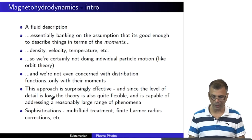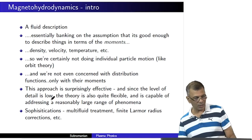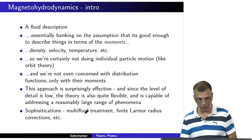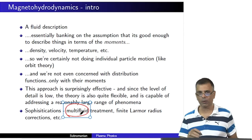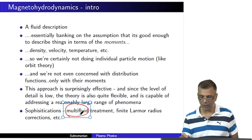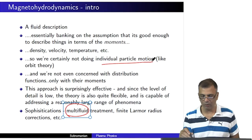Apart from basic magnetohydrodynamics, there are sophistications such as a multi-fluid treatment — for instance, considering electrons and protons as two separate fluids: an electron fluid and an ion fluid. The other thing is that even though individual particle motion is not being considered, this is what is called a Larmor orbit. The radius of gyration is called the Larmor radius.